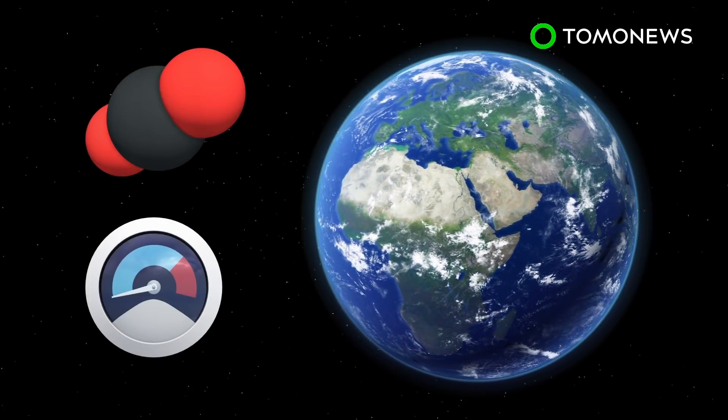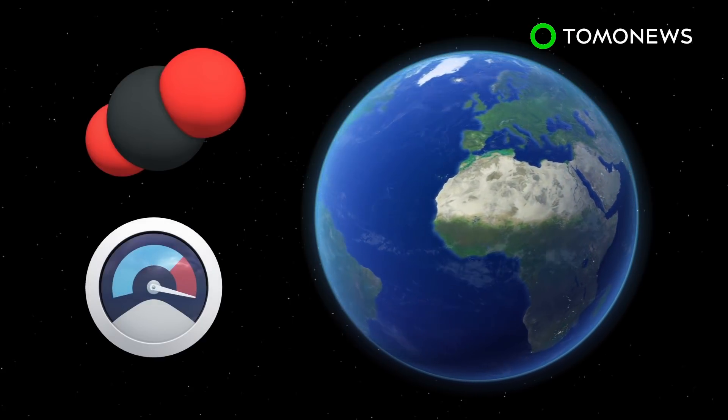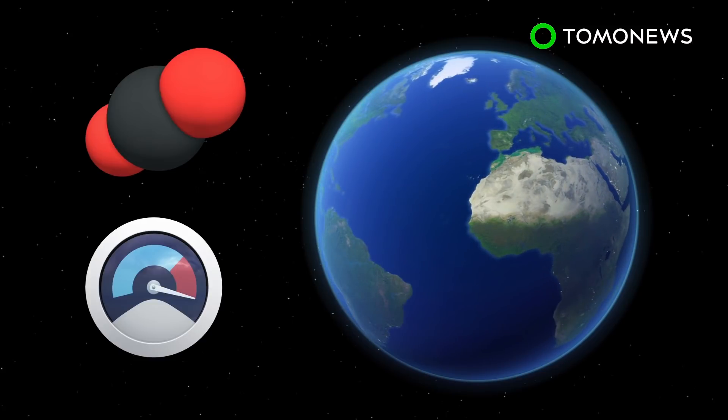Currently, atmospheric carbon dioxide is around 410 ppm. However, if the current trend of releasing more CO2 into the atmosphere continues at this pace, the Earth could reach 1,200 ppm in 100 to 150 years.